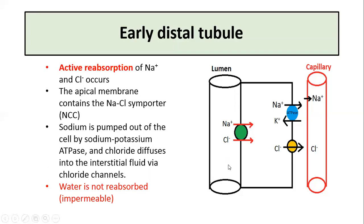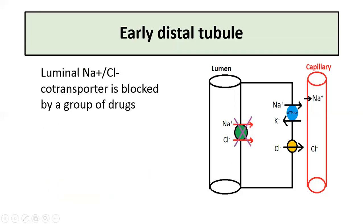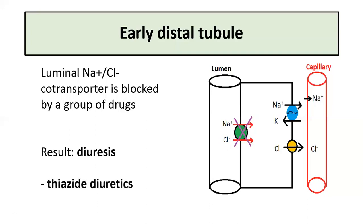So this segment of the distal tubule is also called the diluting segment. The luminal sodium-chloride co-transporter can be blocked by a group of drugs, which will inhibit the sodium and chloride transport from the tubular lumen into the cell. The result is diuresis, and these drugs are called thiazide diuretics, which are used to treat hypertension and heart failure.